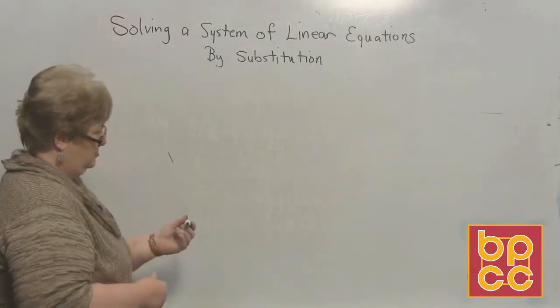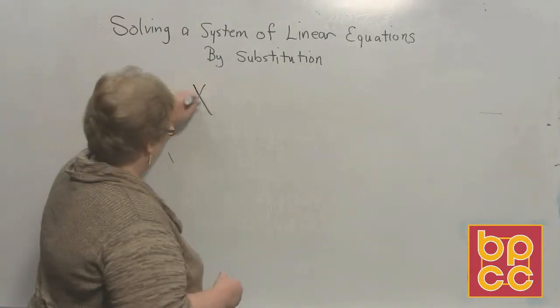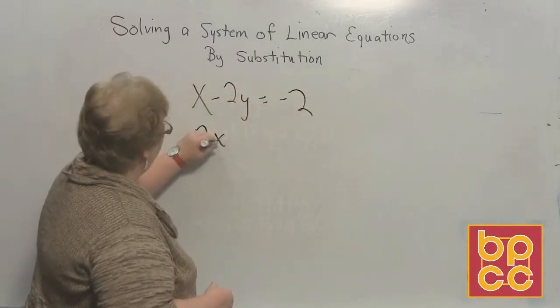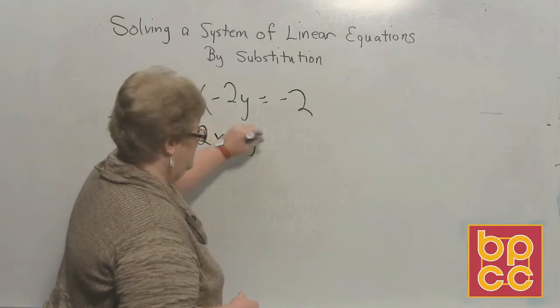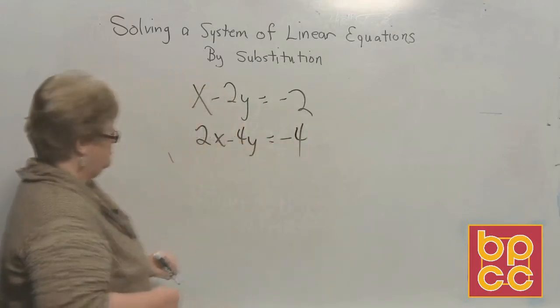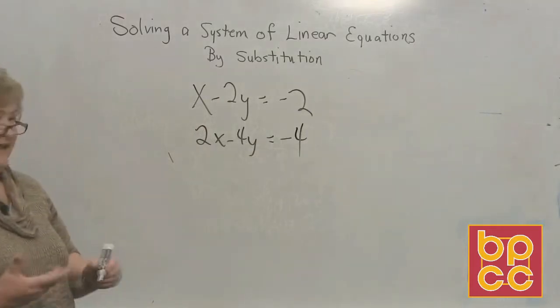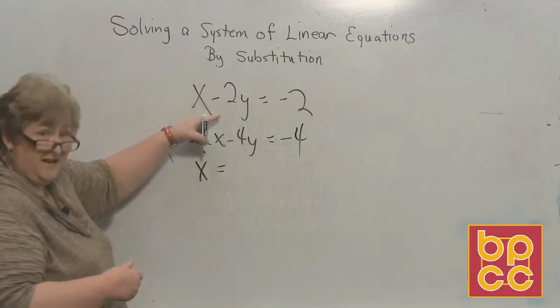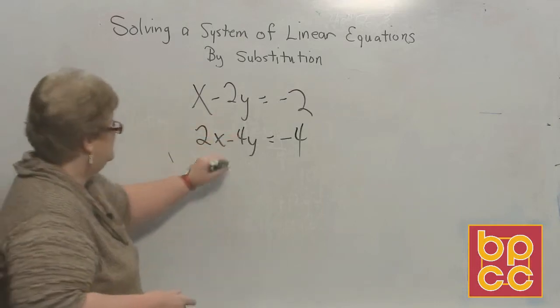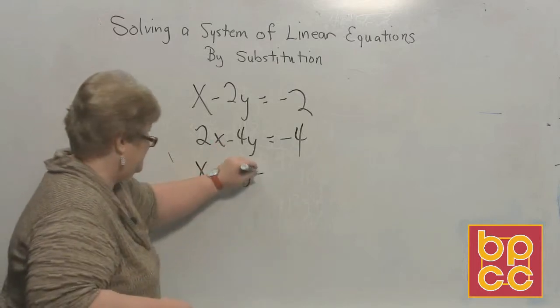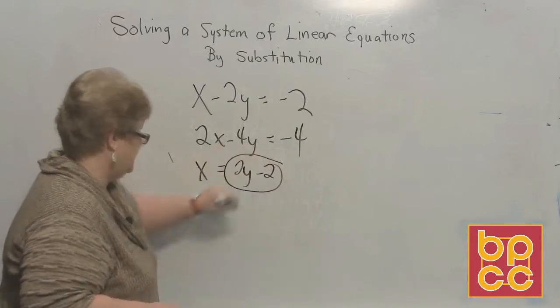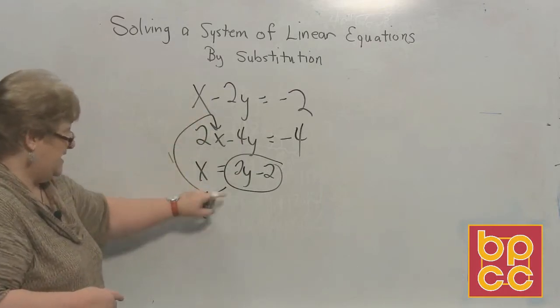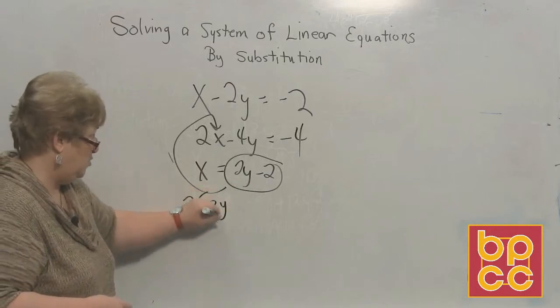How about x minus 2y equal a negative 2, and let's go 2x minus 4y equal a negative 4. X needs to be by himself. So, I'm going to say x is equal to, tell the negative 2y to move to the other side. So that's a positive 2y. Negative 2 is still a negative 2. This is x's new name. 2 times, new name, 2y minus 2.